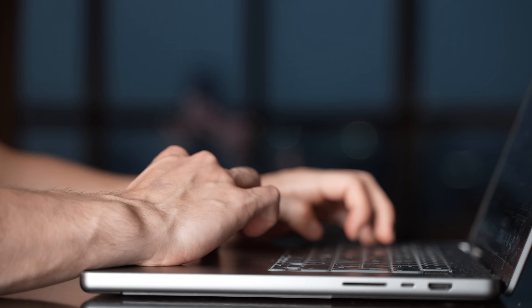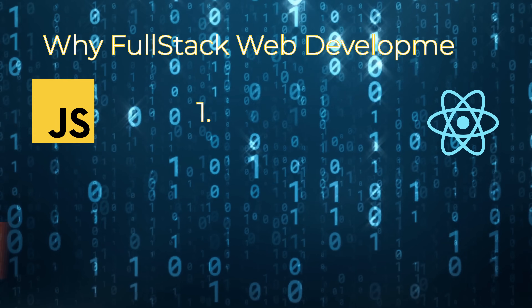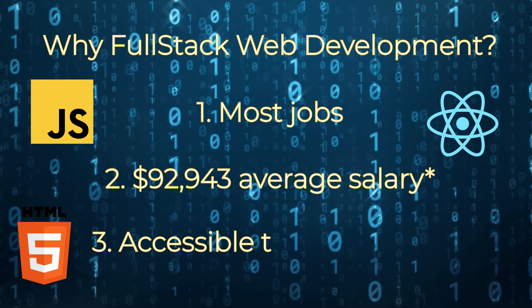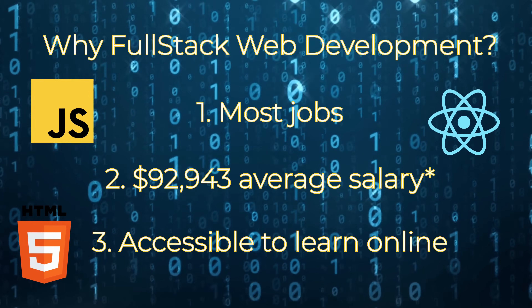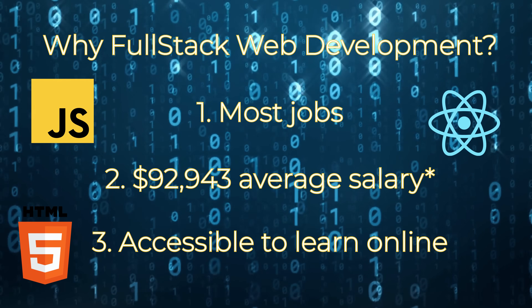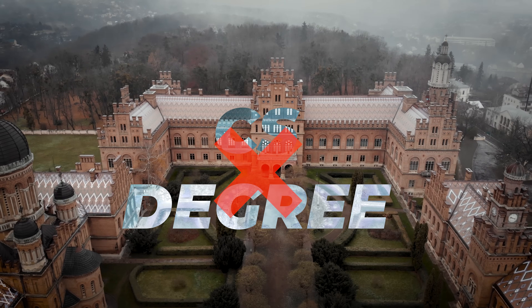There are many ways to become a software developer online, but the best and fastest way to do it in 2023 is to learn full stack web development. You have the most demand for jobs, very good salaries, and yet it is very accessible to learn online in just four to six months with no CS degree required.